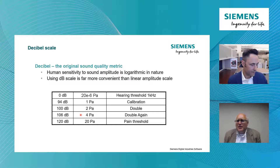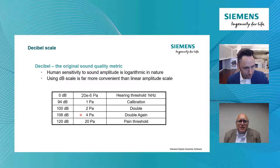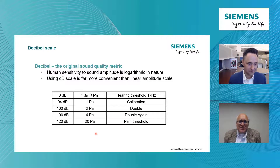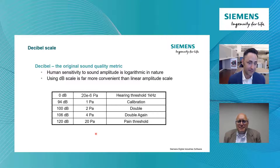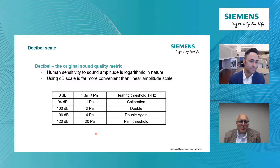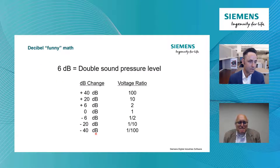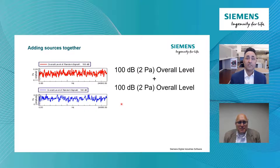For example, reducing the sound of a product by 50% — the sound pressure going down — only changed it from 66 dB to 60 dB. If you don't understand this aspect of decibels, you might be in some big trouble. Now let's talk about summing these values. This is an important thing: I've got multiple sources on my machine or product, and I need to understand how these things sum together.